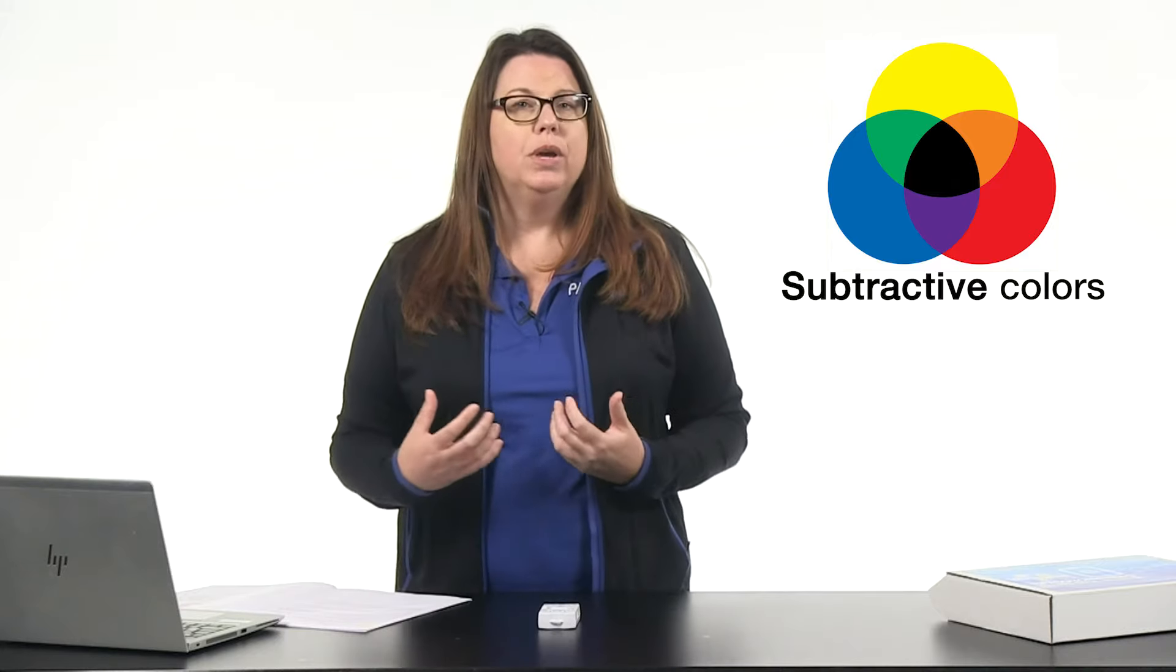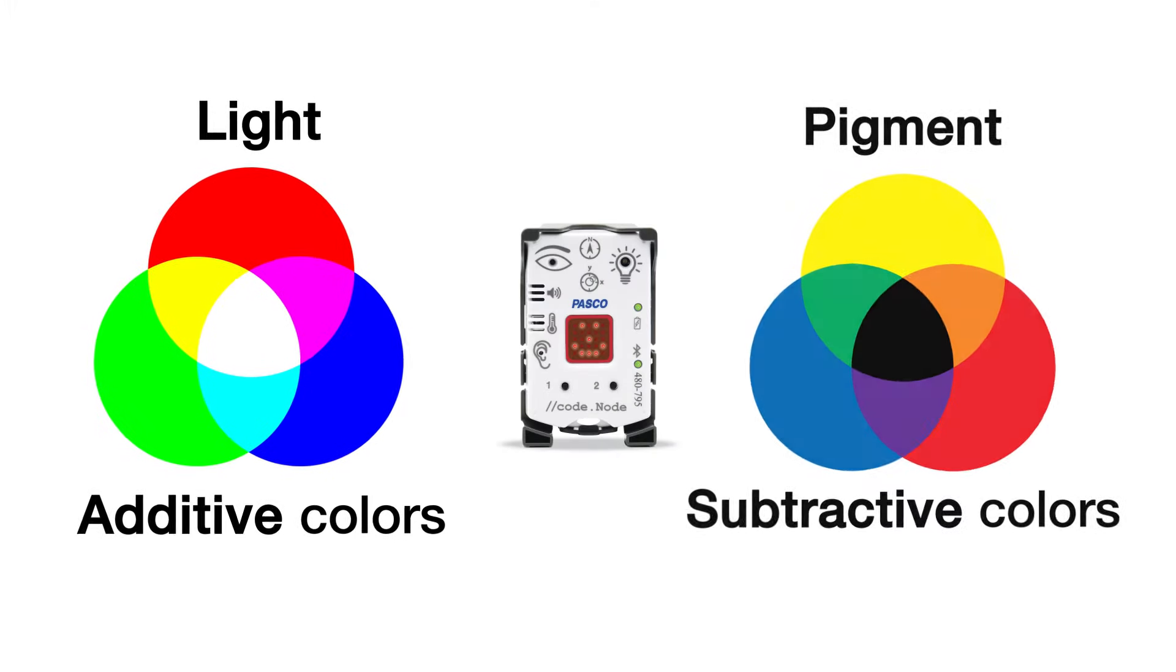But we have to remember here, when we're talking about that in art class, those color mixings are what we call pigments. So it's color of pigments. The RGB LED is the color of light.